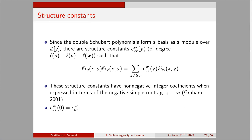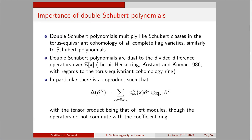Setting y=0, the positive-degree coefficients vanish and we recover the ordinary Schubert polynomial structure constants, so this is a generalization of Schubert polynomial multiplication. Double Schubert polynomials multiply like Schubert classes in the torus-equivariant cohomology of all complete flag varieties — doing for equivariant cohomology what ordinary Schubert polynomials do for ordinary cohomology. They are also dual to divided difference operators over the polynomial ring via the nil-Hecke ring, defined by Kostant and Kumar in 1986.